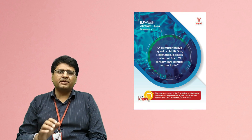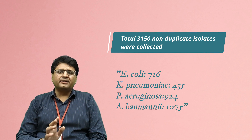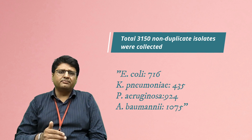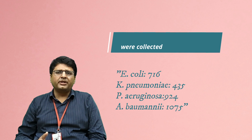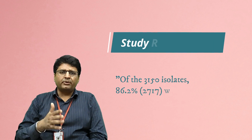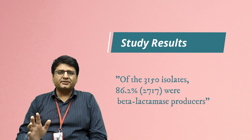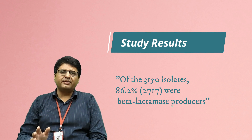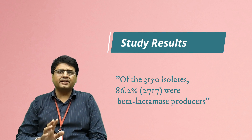A total of 3,150 isolates were collected: E. coli were 716, Klebsiella pneumoniae were 435, Pseudomonas aeruginosa were 924, and Acinetobacter were 1,075. Out of these 3,150 isolates, more than 86% — that is 2,717 isolates — were beta-lactamase producers.